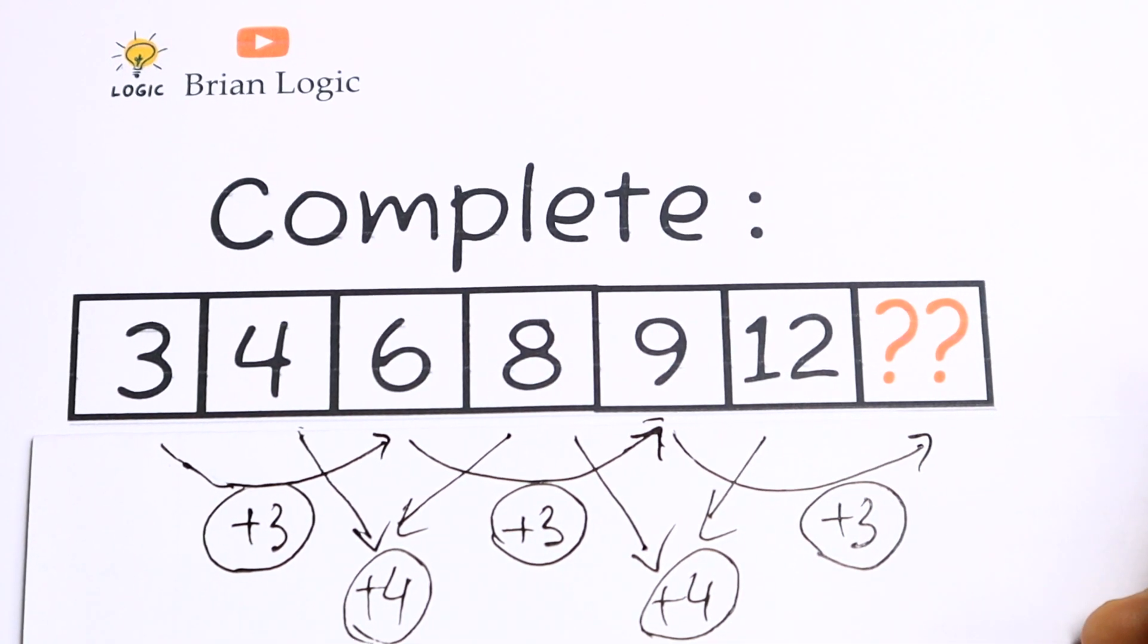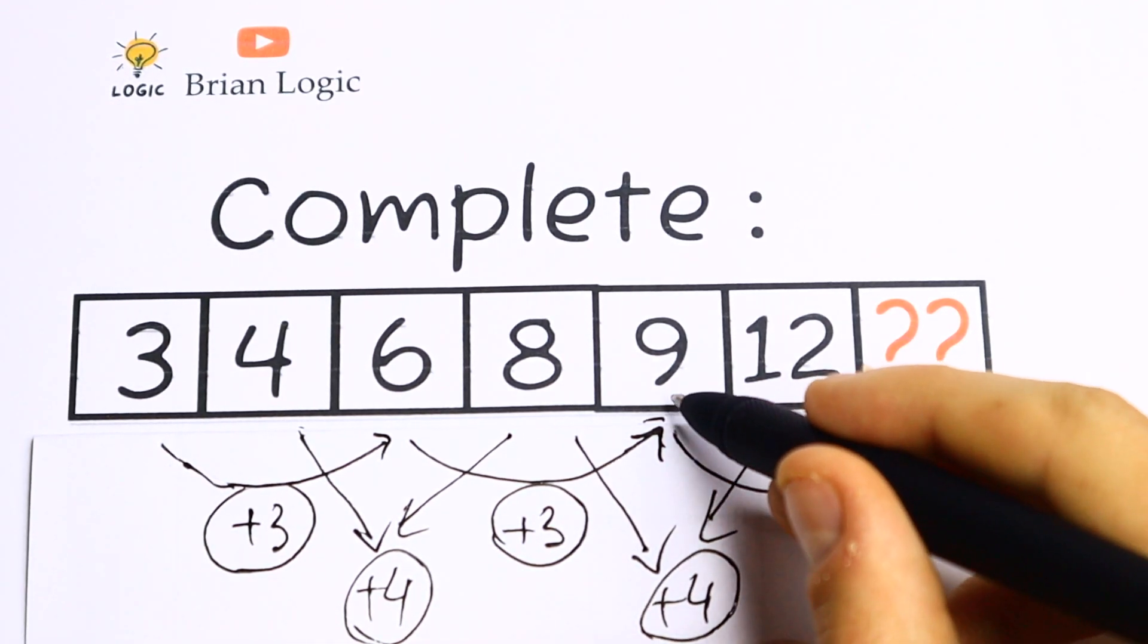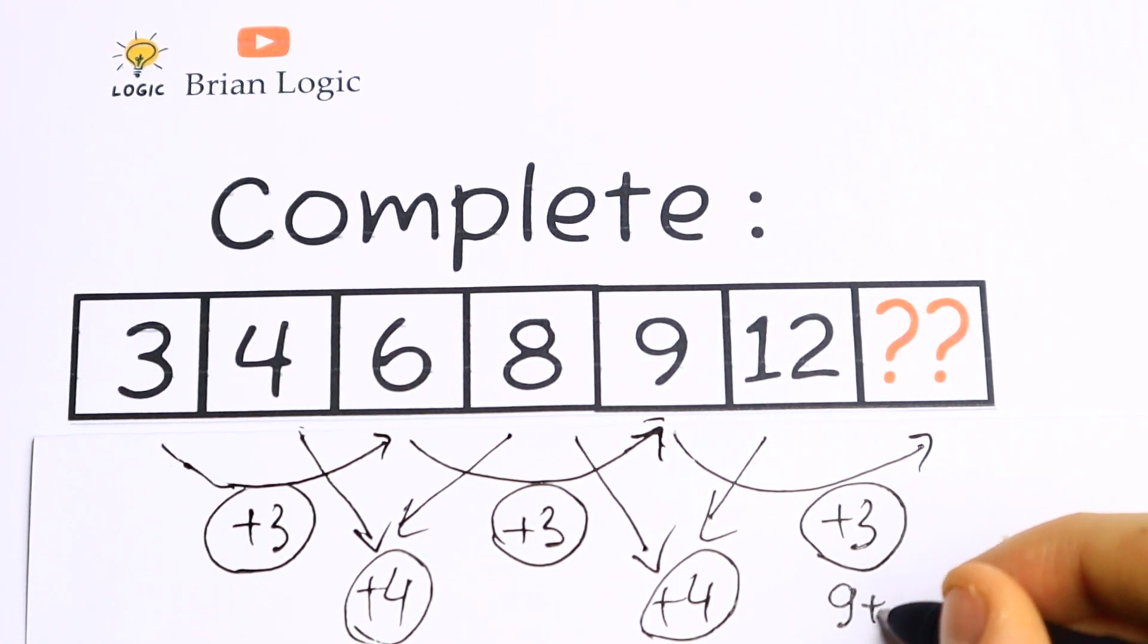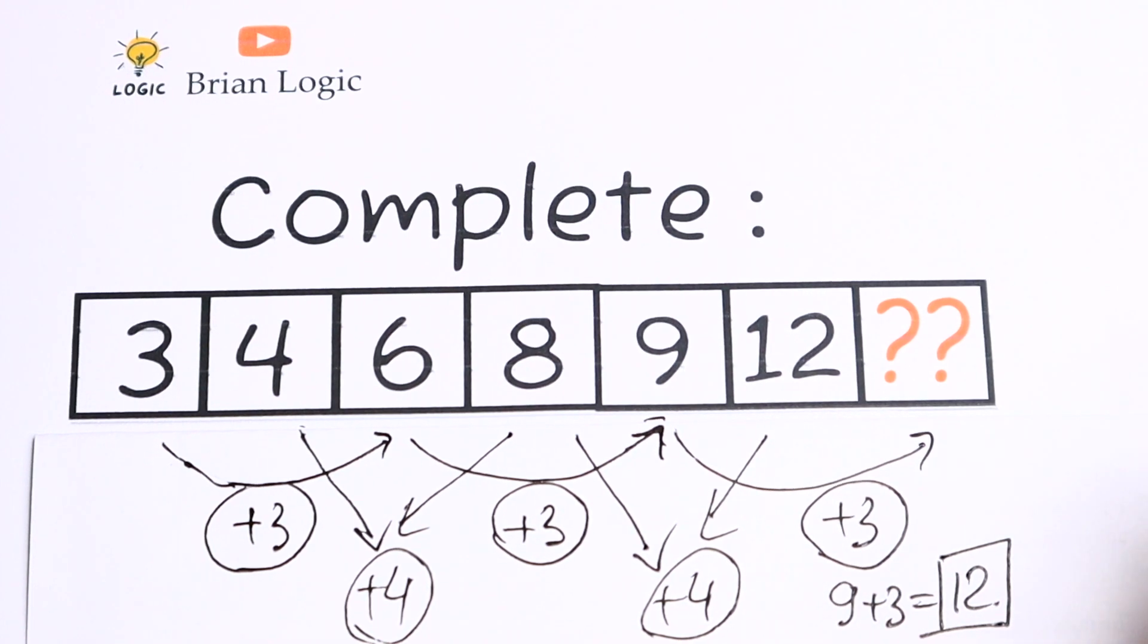So this is the pattern between all of these numbers. Odd positions add 3, even positions add 4, so we need to add to this 9, 3, we will have 12. So 9 plus 3 will be 12, will be our answer.